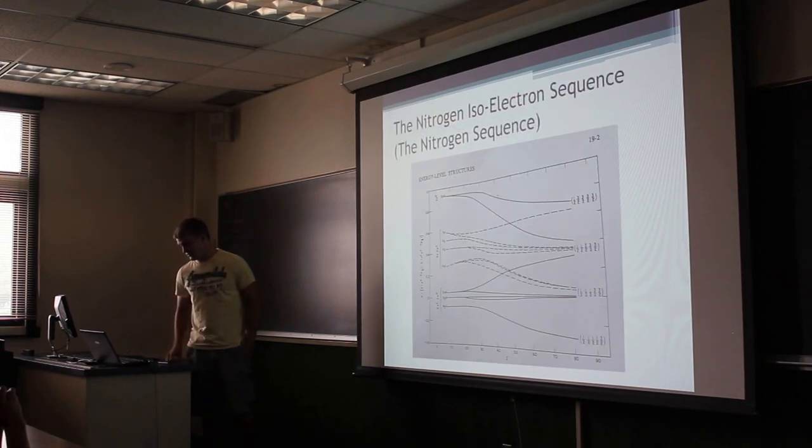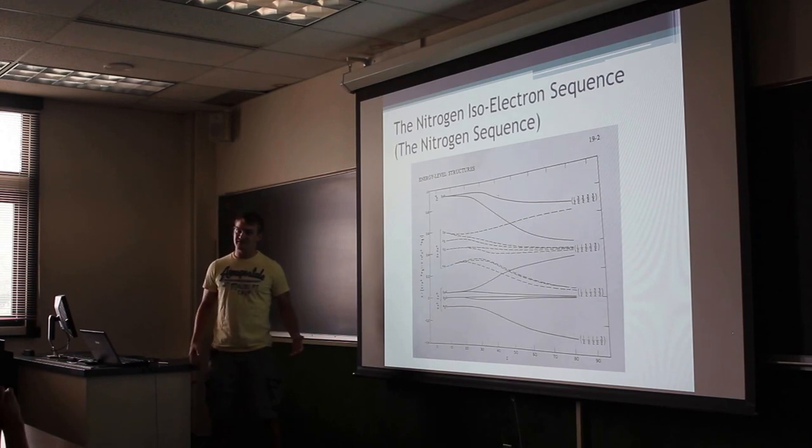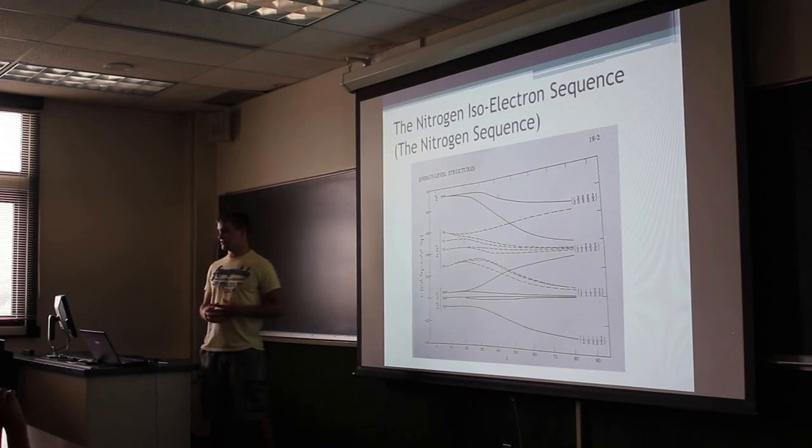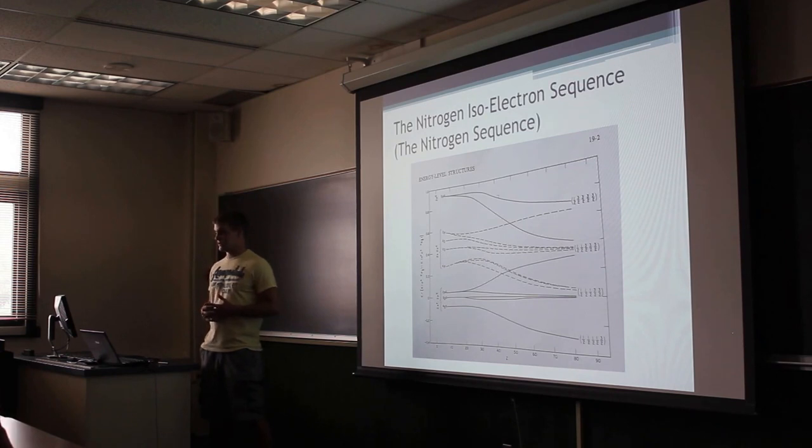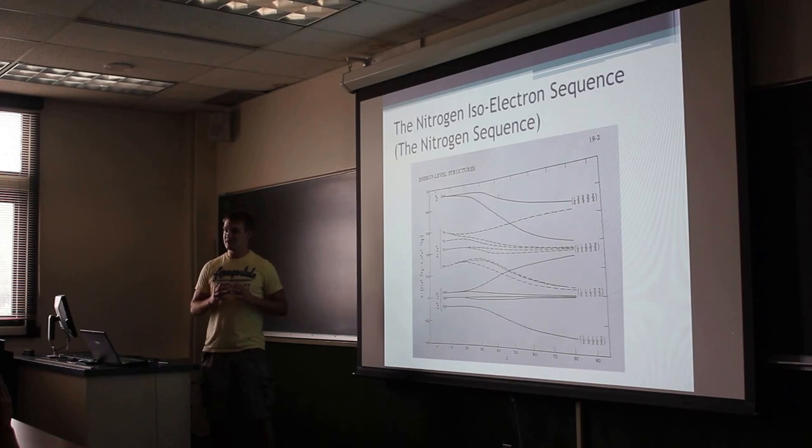What I started out doing, the first thing I did was I had to test this stuff against other known values. So what I first started looking at was the nitrogen isoelectronic sequence. If you don't know what an isoelectronic sequence is, I looked at all the atoms from nitrogen up to Z equals 80, which is mercury. But they were all stripped of their electrons, so they all have the same amount of electrons as nitrogen, so they have seven electrons each.